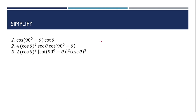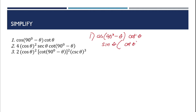Now simplify. Number 1: cosine of 90 degrees minus theta times cotangent theta. Cosine of 90 degrees minus theta equals sine theta. So we have sine theta times cotangent theta. Cotangent theta equals cosine theta over sine theta. The sine theta terms cancel, leaving cosine theta as the result.